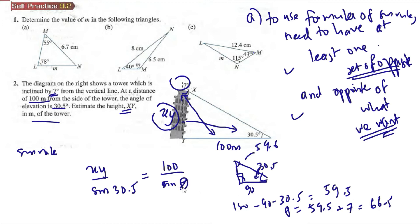So theta is equal to 66.5. Therefore xy is equal to 100 over sin 66.5 times sin 30.5, which is equal to 55.344 meters.